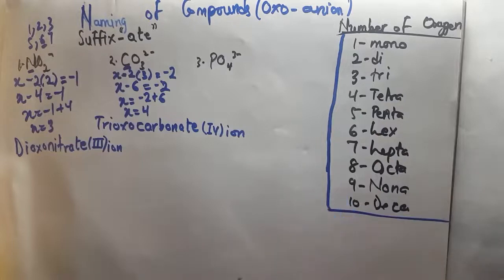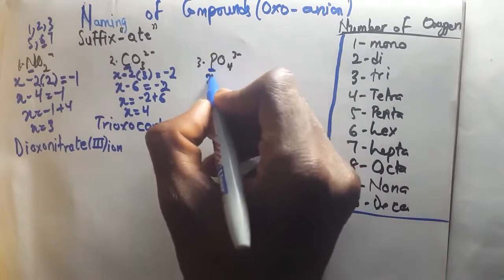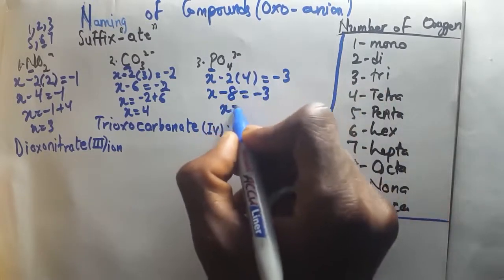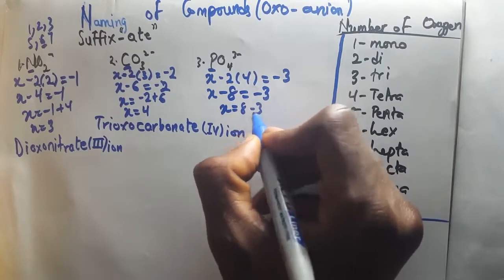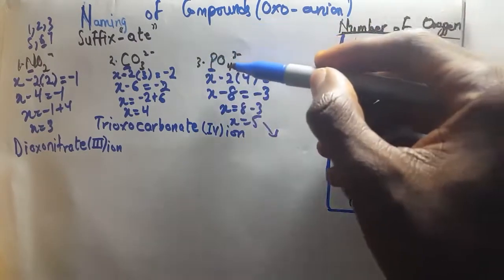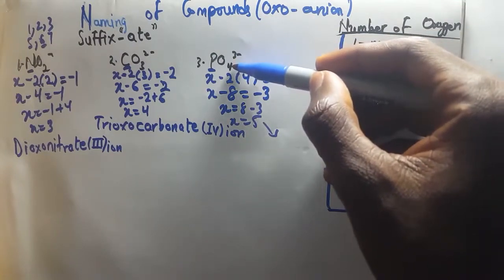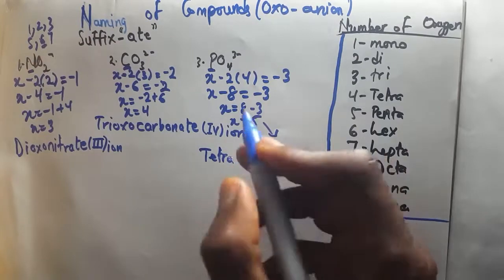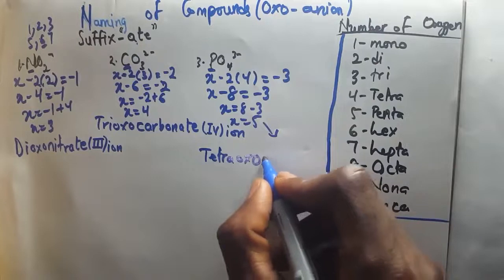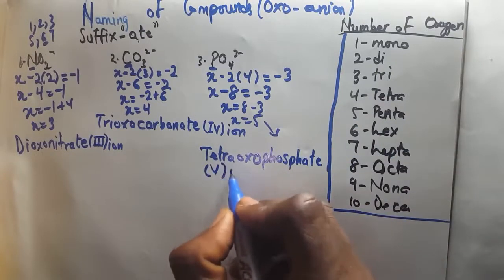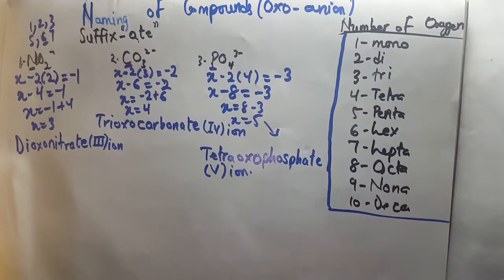The third example is phosphorus with 4 oxygen atoms and a 3-minus charge. So: X plus (−2 × 4) equals minus 3. X minus 8 equals minus 3. X equals minus 3 plus 8, so X equals 5. The name is going to be tetraoxyphosphate(V) ion — tetra because there are 4 oxygen atoms, oxo for the oxygen, phosphate with the -ate suffix, and Roman numeral V for the oxidation number 5.